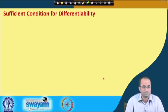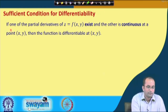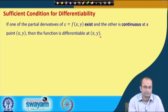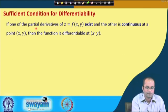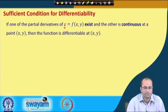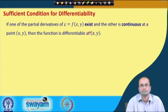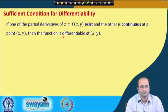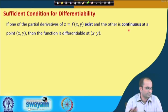Now we move to the sufficient conditions for differentiability. If one partial derivative of z exists and the other is continuous at a point (x, y), then the function is differentiable at (x, y). Essentially, continuity of one partial derivative, combined with existence of both, is sufficient.